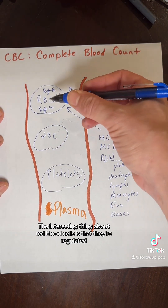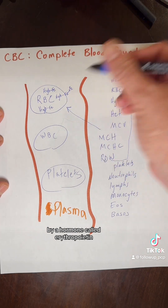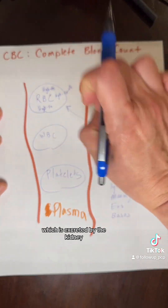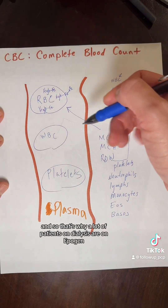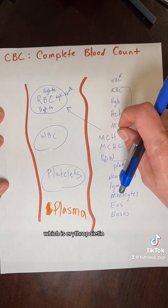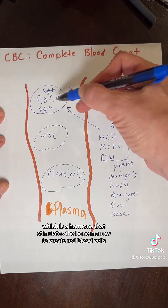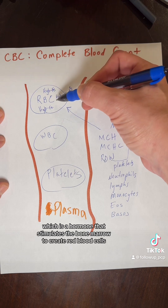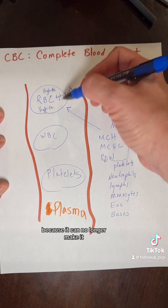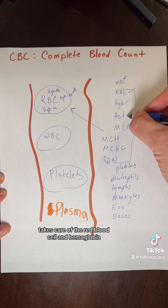Red blood cells are regulated by a hormone called erythropoietin, which is excreted by the kidney. That's why a lot of patients on dialysis are on Epogen, which is erythropoietin — a hormone that stimulates the bone marrow to create red blood cells. You have to replace that in people with kidney failure because they can no longer make it.